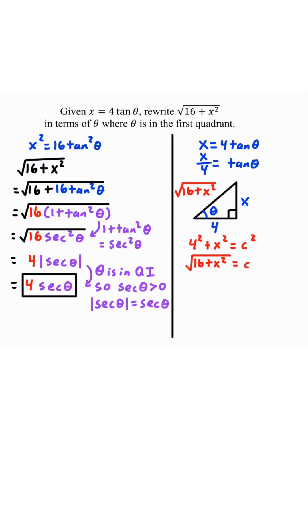So what trig relates square root of 16 plus x squared? It's the hypotenuse side. Let's try not to use the x and use the 4. So we have the hypotenuse and the adjacent, and we want it in the numerator.